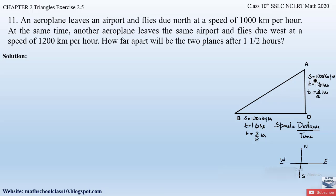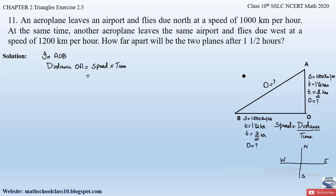We have the speed and time, so let us calculate the distance traveled by the first aeroplane after three by two hours at a speed of 1000 km/h. In triangle AOB, distance OA equals speed into time. The speed is 1000 kilometers and time is three by two hours. So 1000 multiplied by three by two gives 1500 kilometers. Distance OA is 1500 kilometers.